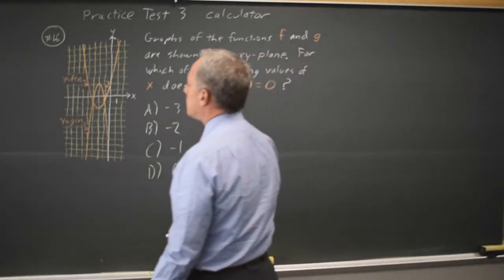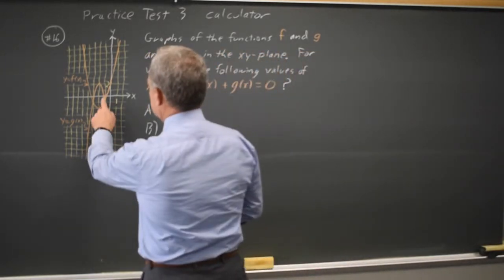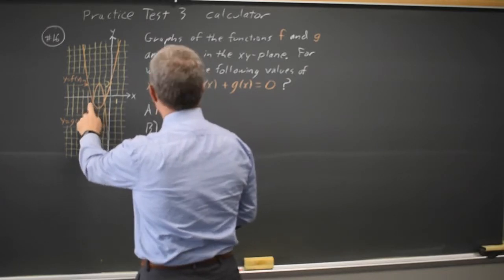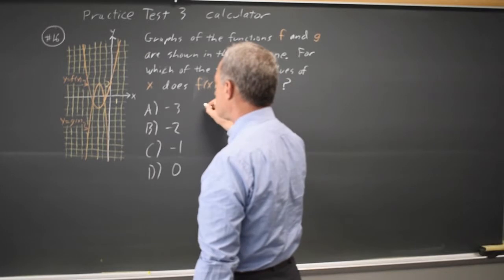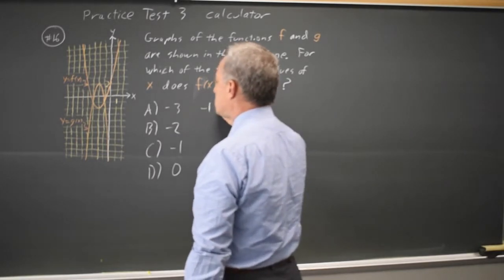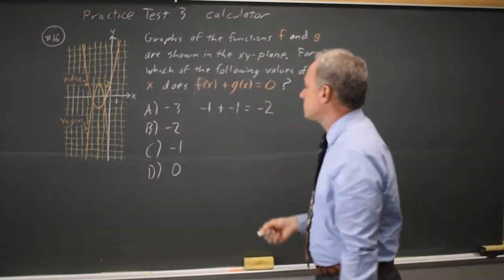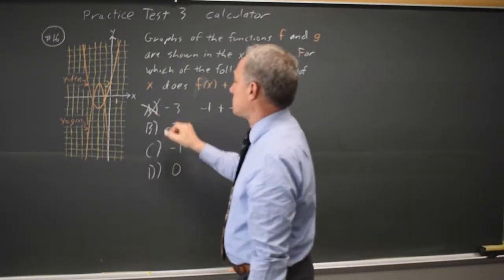They start with negative 3. So if this is the y-axis, negative 1, negative 2, negative 3, f of x equals g of x, but f of x equals negative 1. g of x is also negative 1, so f of x plus g of x is negative 2, which is not 0, so choice A is not correct.